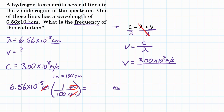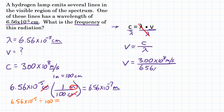Plugging into our calculator: 6.56 times 10 to the negative 5, then dividing by 100. You should get 6.56 times 10 to the negative 7, and that is in meters. So now we can use that wavelength in our formula — 6.56 times 10 to the negative 7 meters goes in the denominator for wavelength.